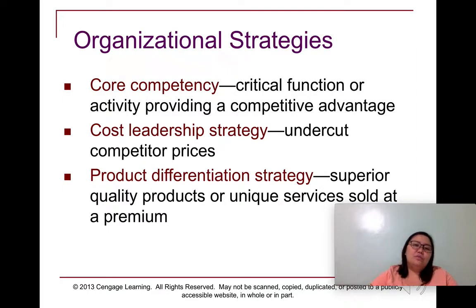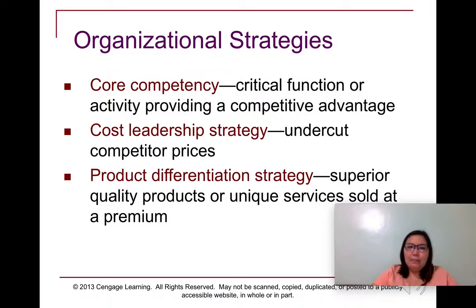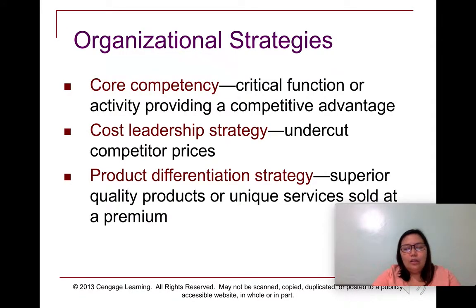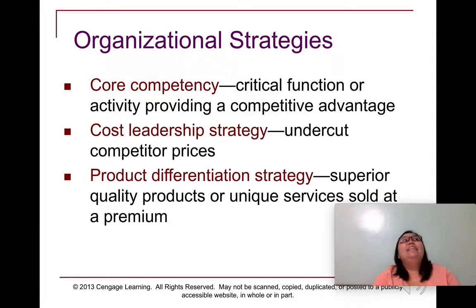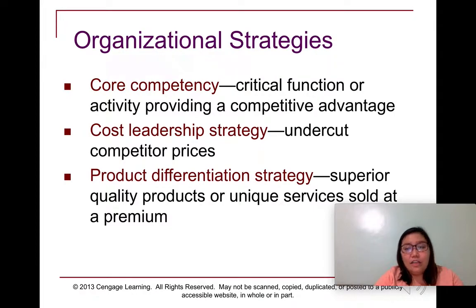Another cost leadership example in cell phones would be Vivo — mid-range phones at a lower price compared to premium brands like iPhone and Samsung. There's also MI, a Chinese brand with a wide range of products: TVs, cell phones, tablets, CCTV cameras, and even electric scooters. Basically, what they do is sell their products at a lower price.